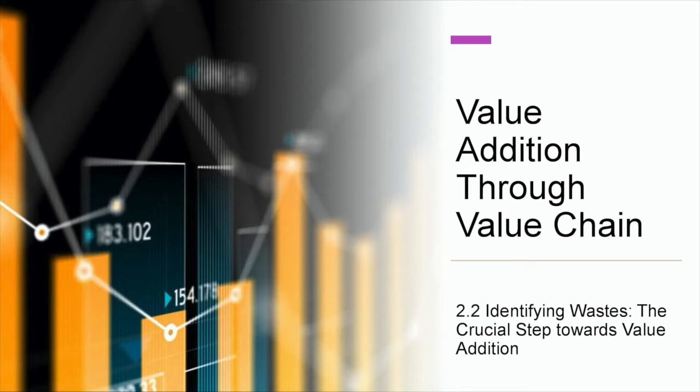In order to convert a rural supply chain into a value chain, we need to identify these wastes and also try to minimize them. There are generally 7 different types of wastes that occur during the supply chain of most businesses. In rural supply chain, these are the ones which have to be tackled to convert the supply chain into a value chain.